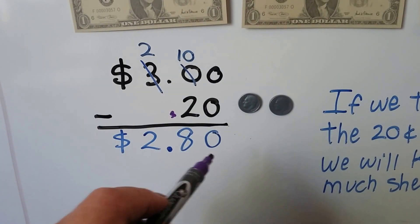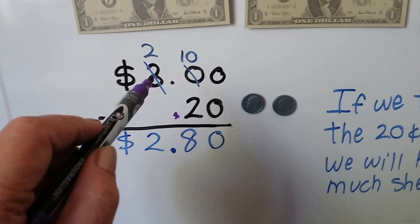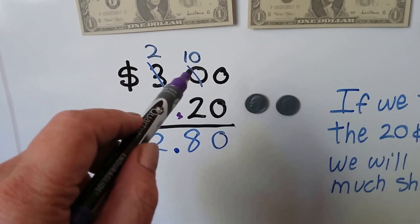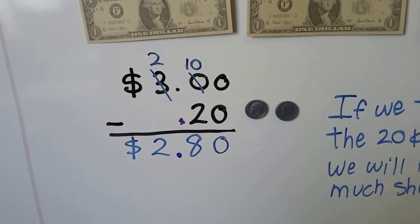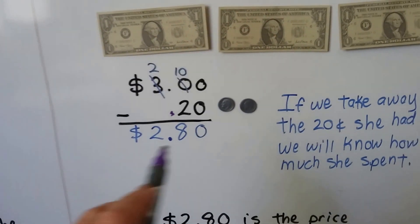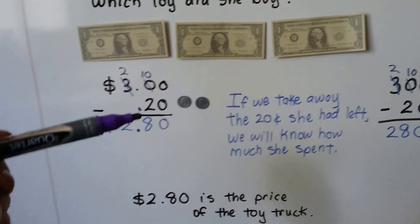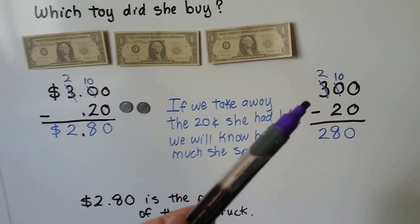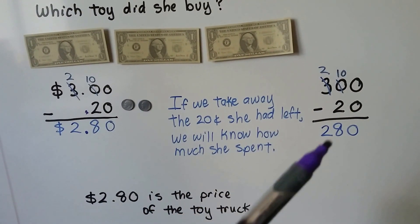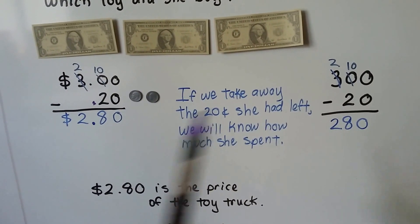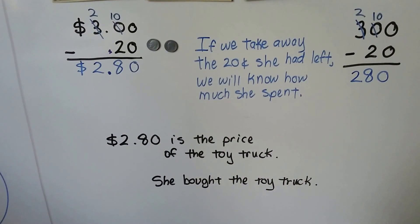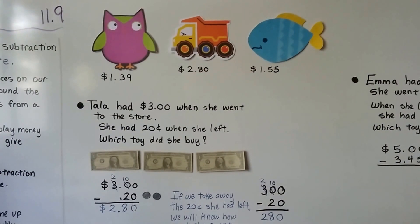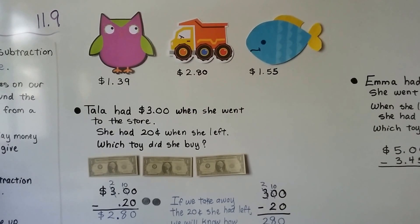She started with three dollars and had 20 cents left. Zero minus zero is zero. Zero minus two — we regroup the three dollars to two dollars, and this becomes ten. Ten take away two is eight. We drop down the two, so she spent two dollars and eighty cents. Two dollars and eighty cents is the price of the toy truck, so we know Tala bought the toy truck.